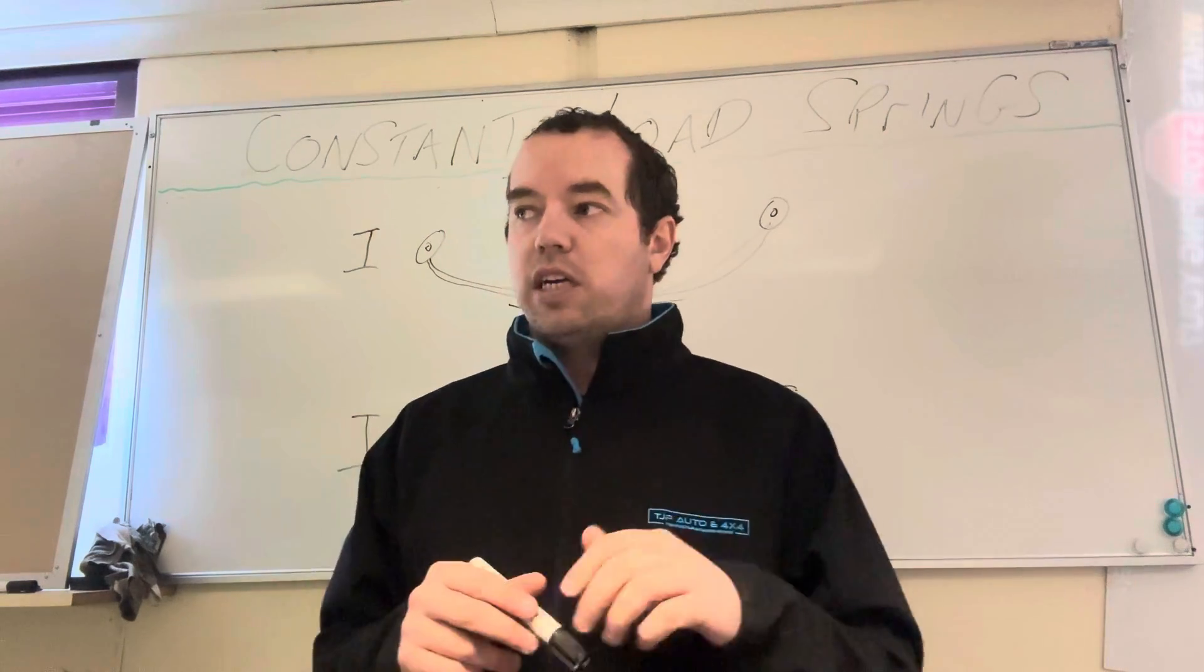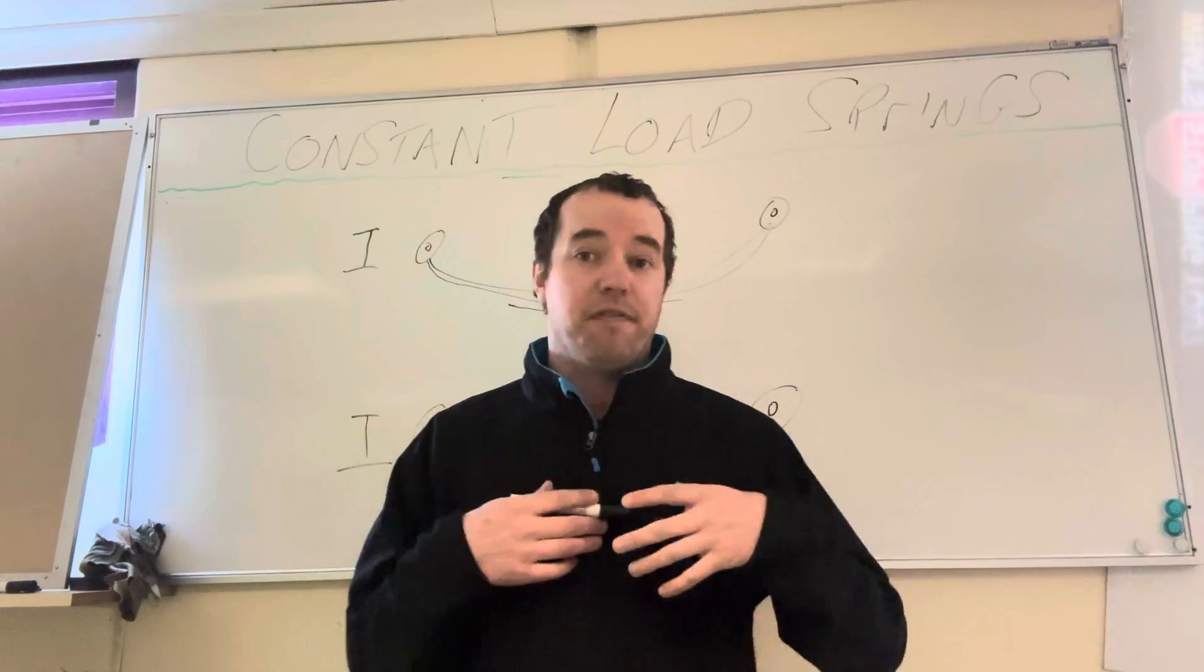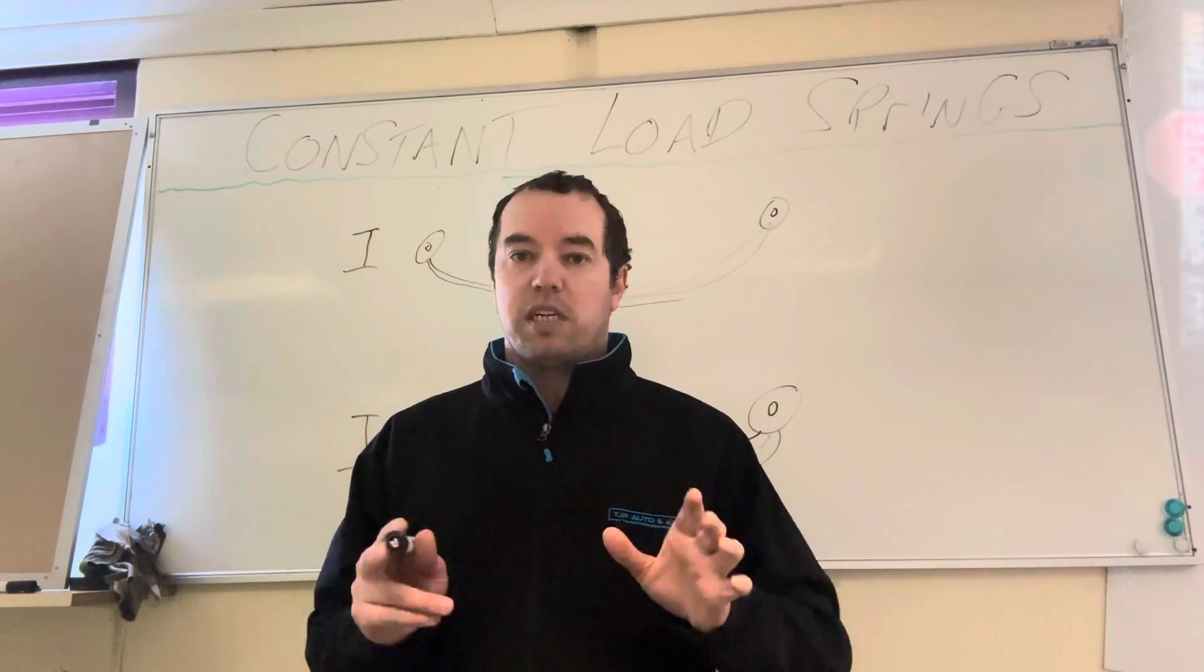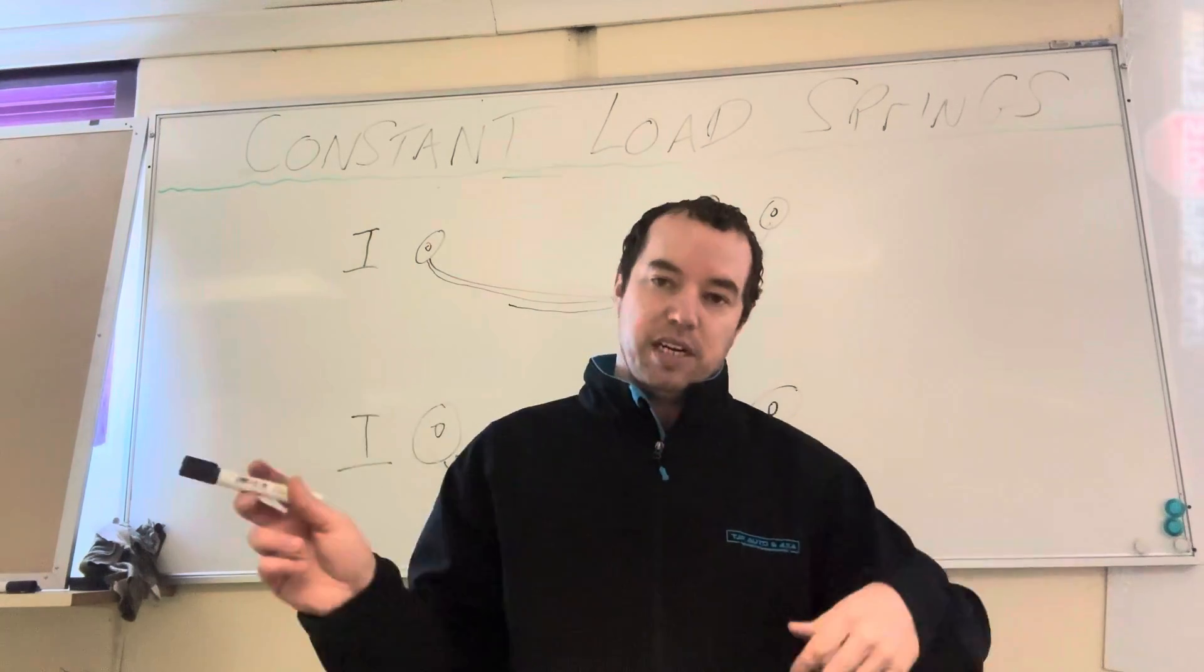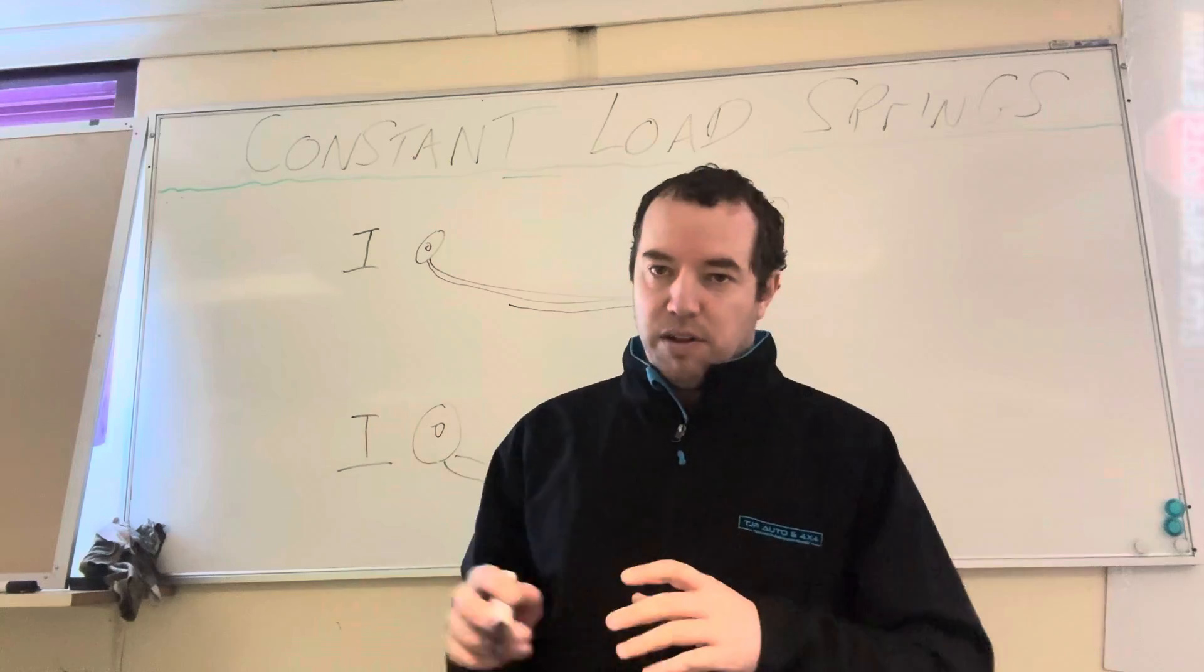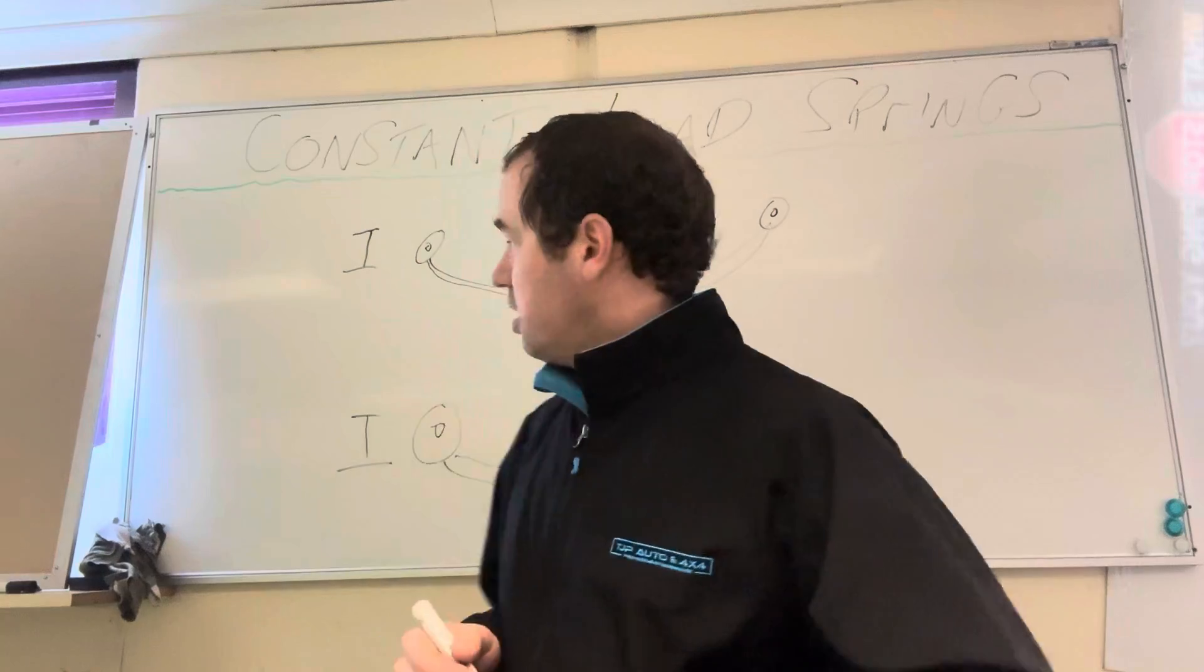Now a constant load leaf spring, a common one might be say a 500 kilo leaf spring. Most leaf springs when they're listed are listed as 500 kilo constant, 300 kilo constant, 0 to 150, 0 to 300, etc. That's how they're generally listed - parabolic sort of thing, we'll do another video on that later.